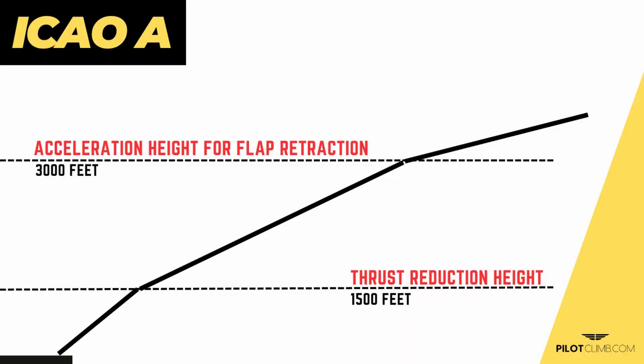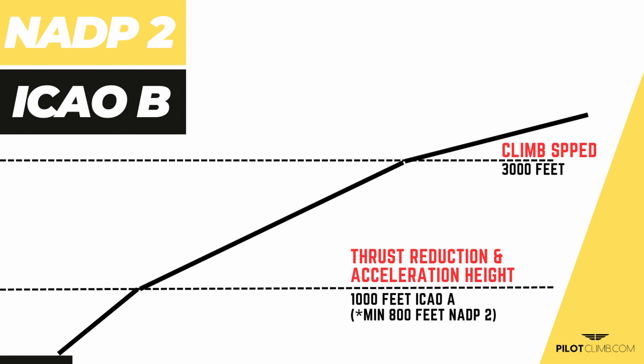On the ICAO Alpha procedure, you keep take-off thrust until 1500 feet, then at 1500 feet you reduce thrust from take-off to climb thrust, then climb to 3000 feet above Aerodrome Level, and at 3000 feet you retract the flaps on schedule. We can think of these as two big families: the first family — NADP 2 / ICAO Bravo — produces less noise over long distances because earlier flap retraction gives a better climb gradient, but produces more noise at the initial part of the climb.